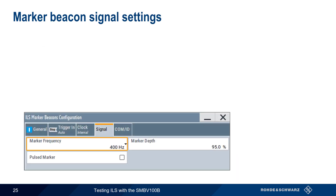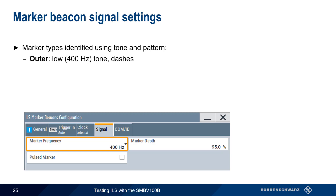Because they all operate on the same frequency, the inner, middle, and outer markers are differentiated both by the tone frequency of their signal as well as by the pattern of sounds. The outer marker uses a 400 Hz tone sent as a pattern of dashes. The middle marker uses a 1300 Hz tone sent in a dot-dash pattern.